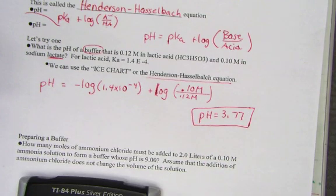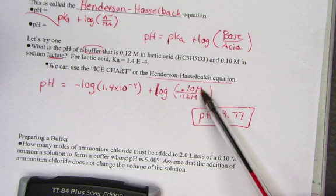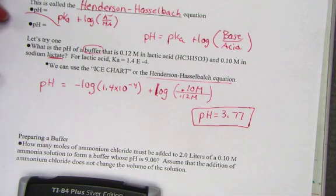The Henderson-Hasselbalch equation takes pKa plus the log of ratio of base over acid, where the conjugate base came from the sodium lactate common ion.